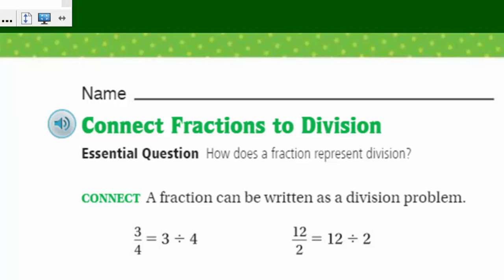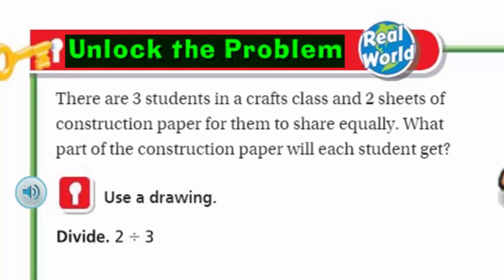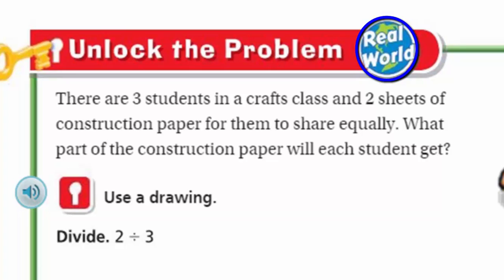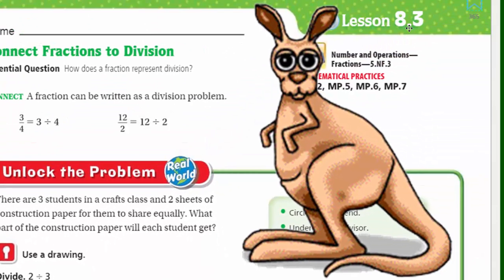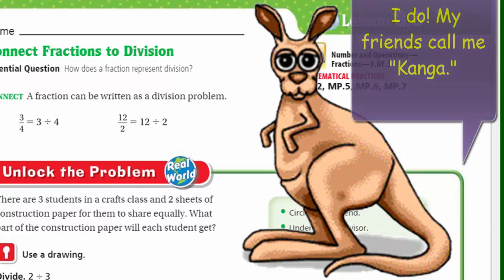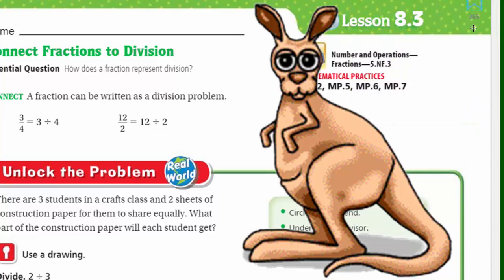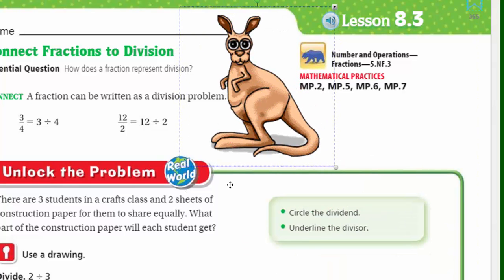Now, it's time for unlock the problem. It's real world. There are 3 students in a crafts class and 2 sheets of construction paper for them to share equally. What part of the construction paper will each student get? That is a great question. And it says to use a drawing. And our kangaroo guy says to circle the dividend.